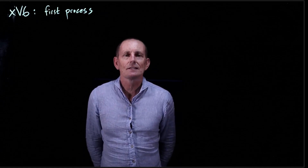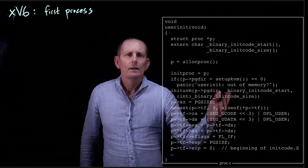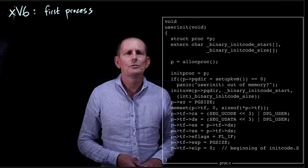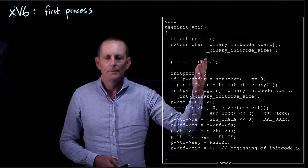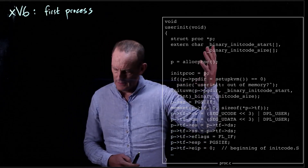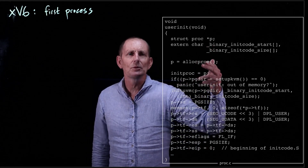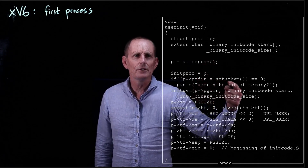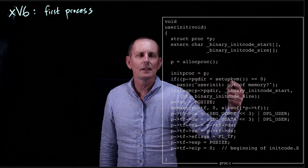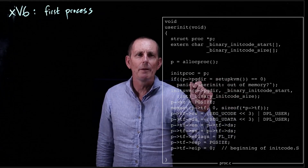Let's look at how xv6 sets up the first process. We have userinit which goes ahead and allocates a procedure in the procedure table. Then what we do first is set up the KVM — setting up the kernel virtual memory mappings.